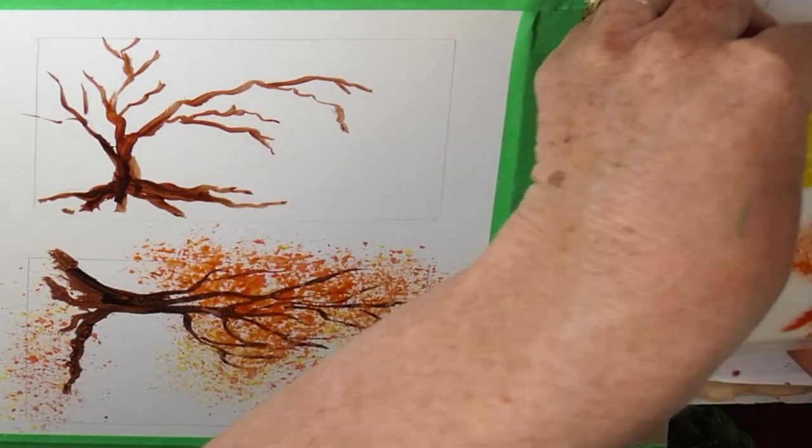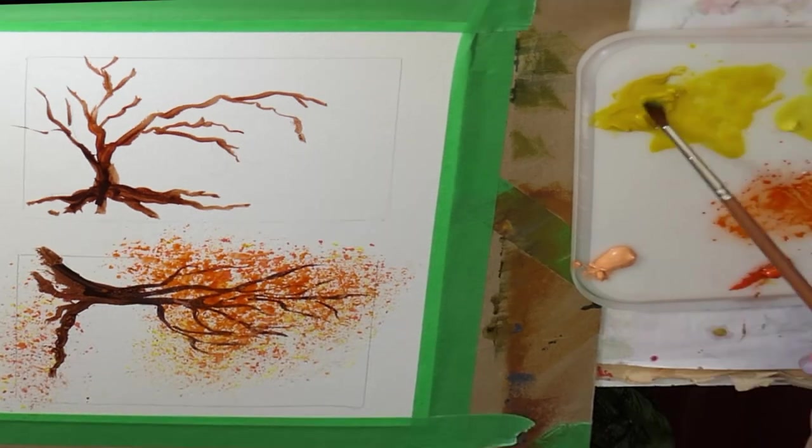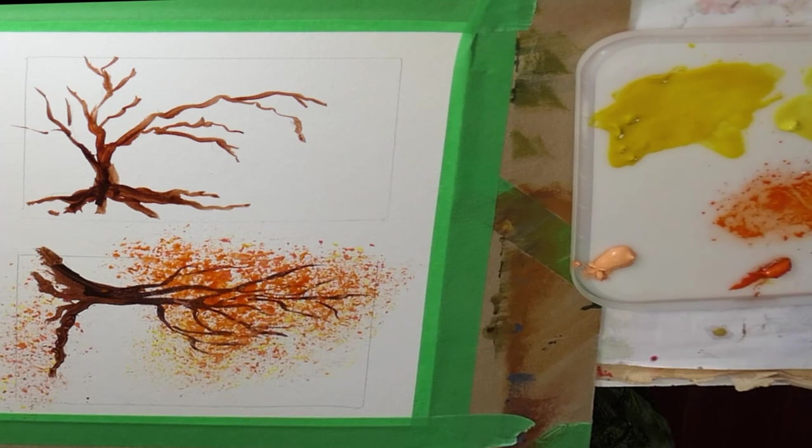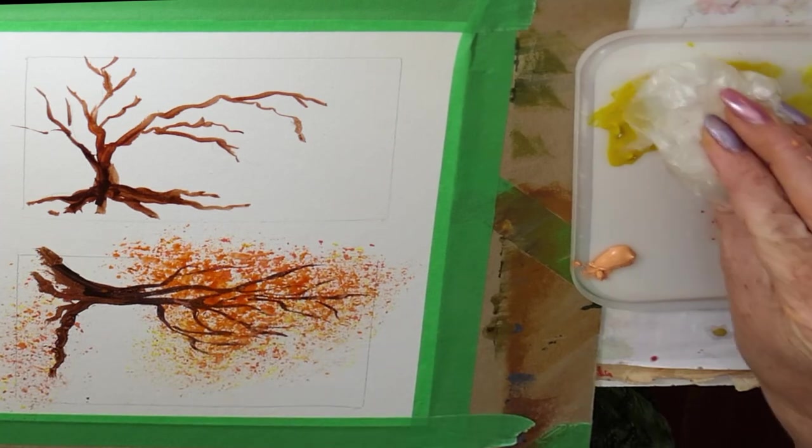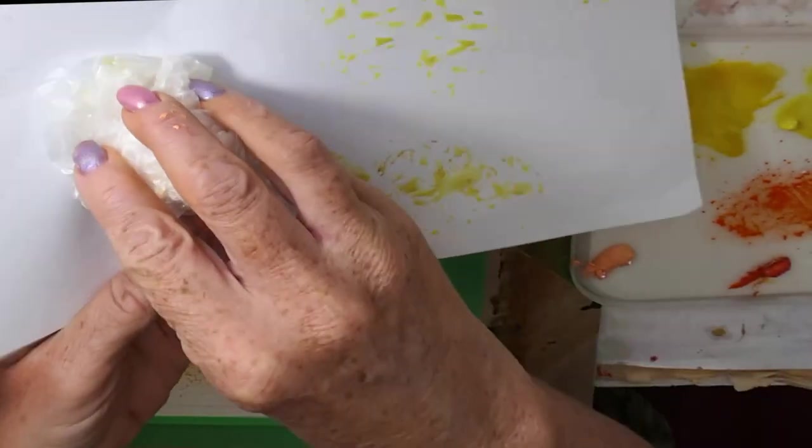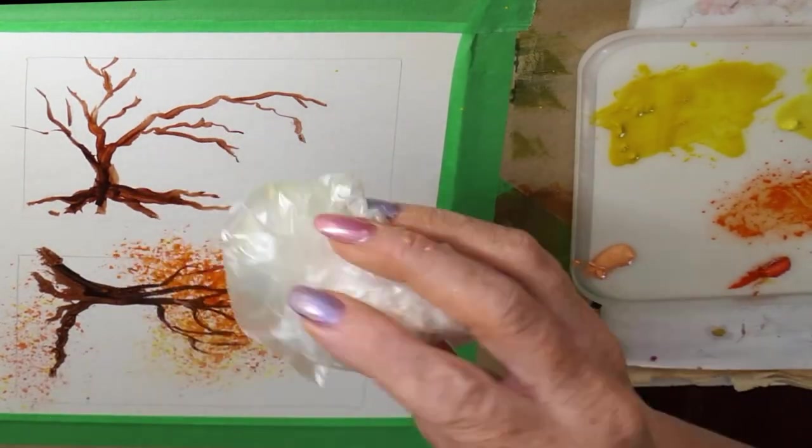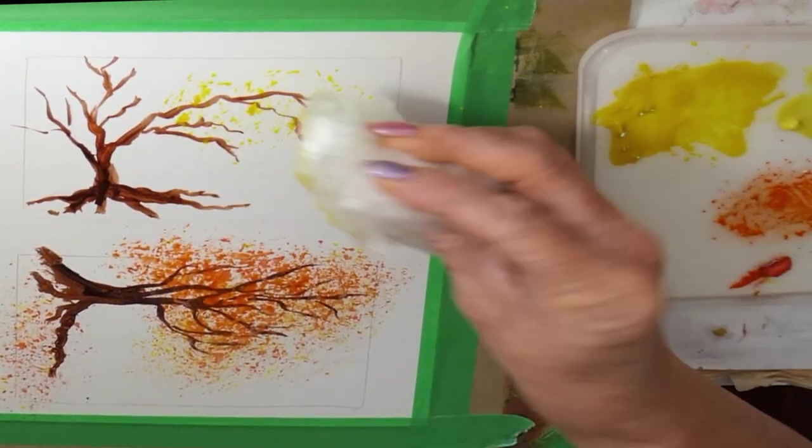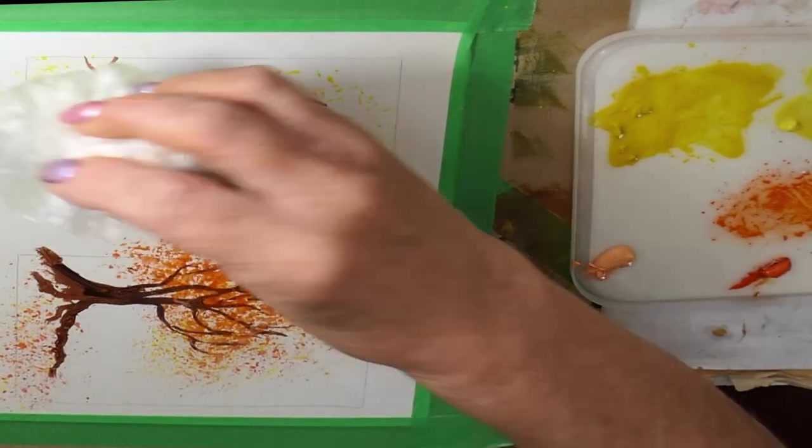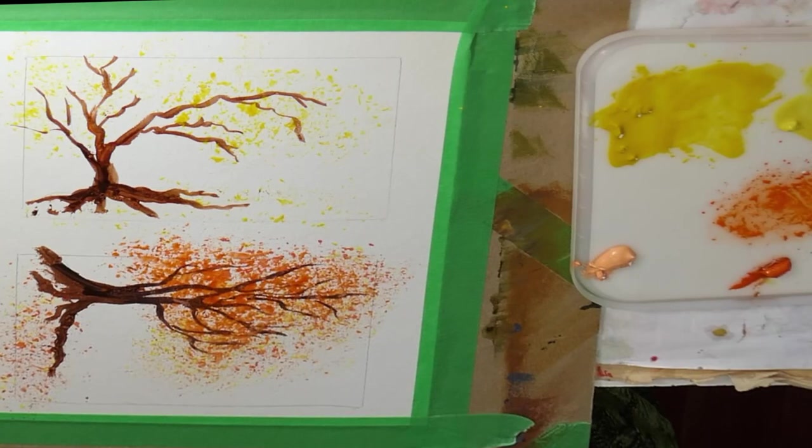Just get rid of that. And I'm just using an old ice cream lid. And I'm going to start off with a bit of this medium yellow here. And I'm going to pop that on there. And you can see you get quite a lot of paint on there. So just get a spare bit of paper and just plop it on the spare bit of paper a few times first so that you've got less paint.